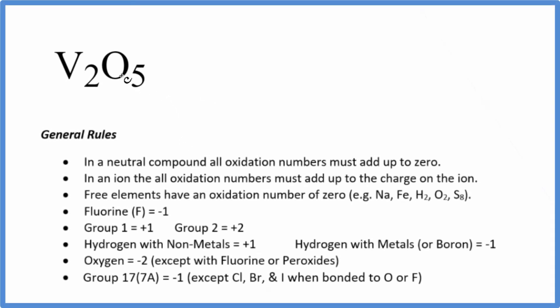In this video, we'll find the oxidation numbers for each element here in V2O5. This is divanadium pentoxide, often just called vanadium pentoxide.